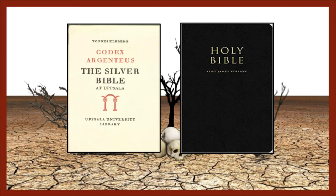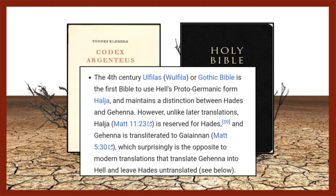How did the word 'hell' become so common not just as a translation but as a general theological concept? Hell reached us through the fourth-century Wulfila and the Gothic Bible — the first Bible to use hell's proto-Germanic form 'halja' — which maintains a distinction between Hades and Gehenna. The key point is that the proto-Germanic word 'halja' reached the English language through the biblical text, especially through Christianity, and that's how it entered the general Western world's view of hell.